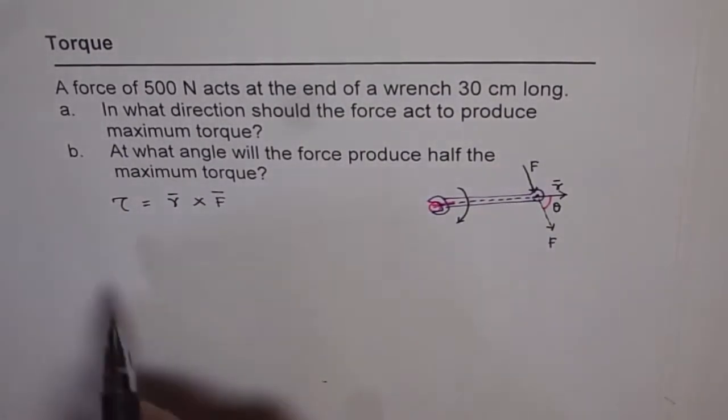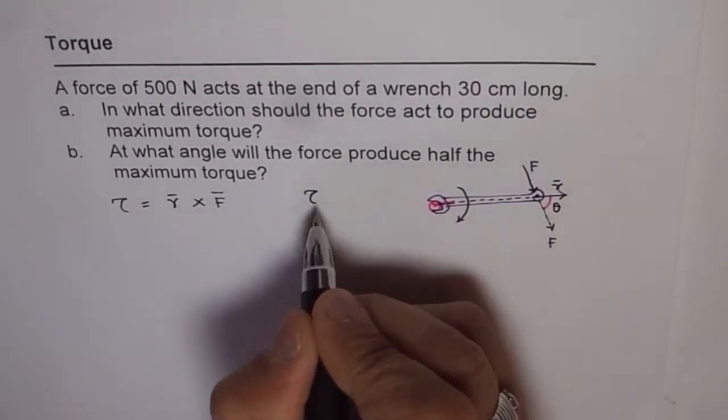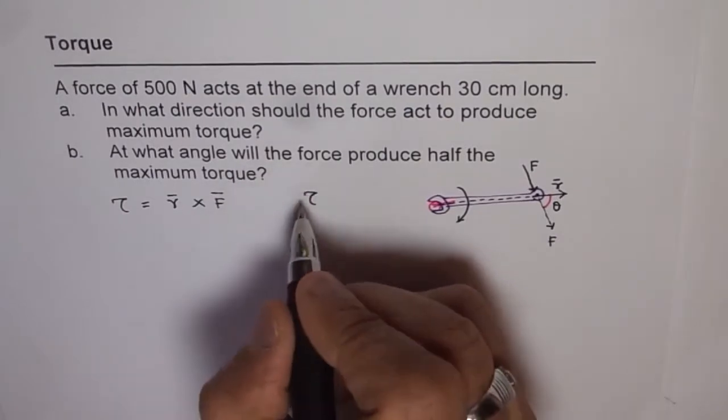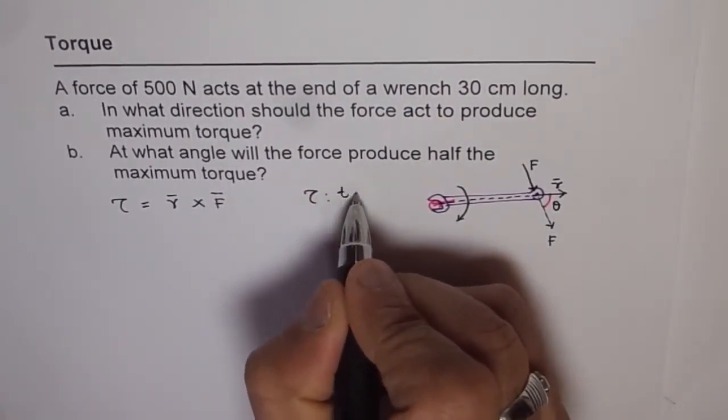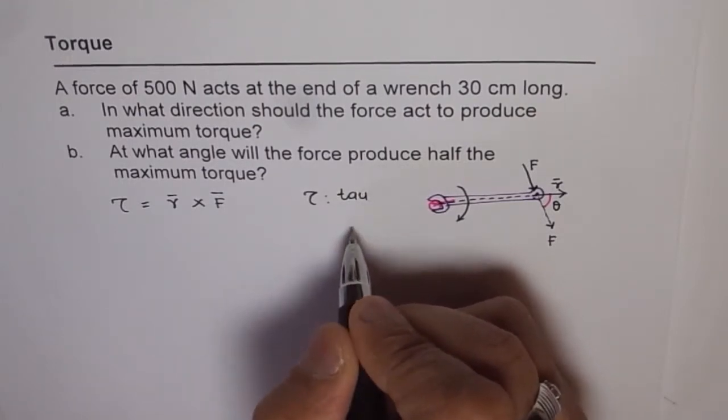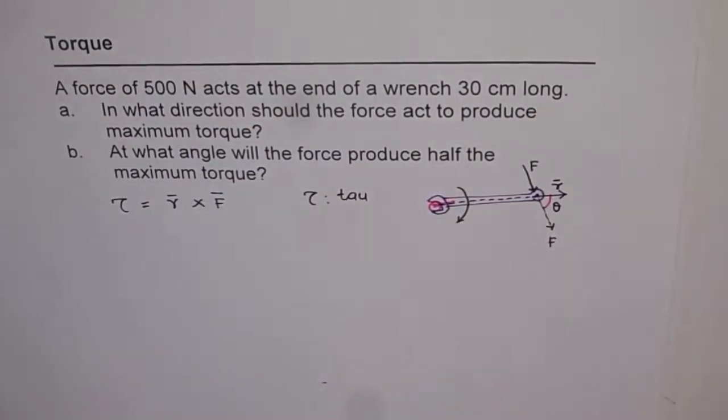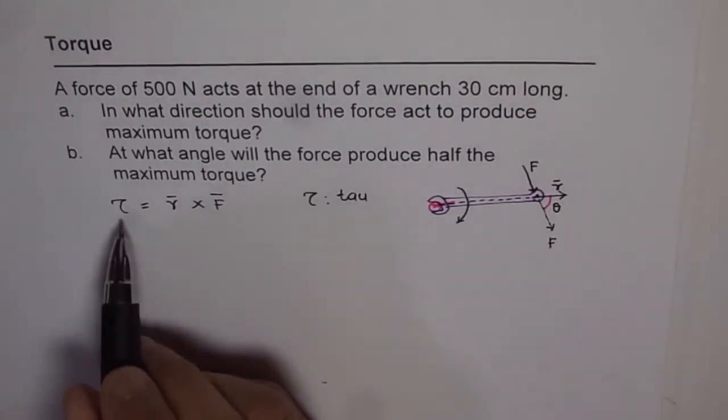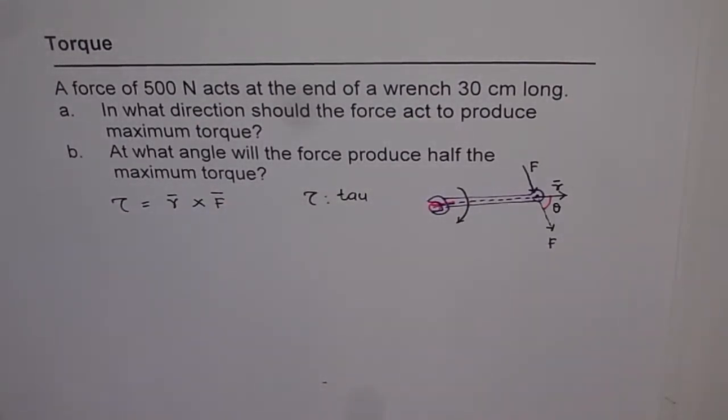This symbol which I have made here is a Greek letter. Torque is written as this Greek letter, which we will call as tau, T-A-U. You can write T for it for the time being. But tau equals to r cross f, and that is the equation for torque.